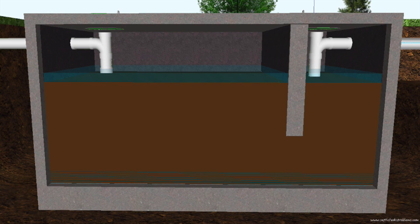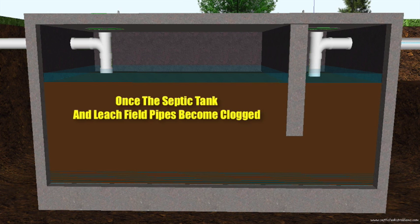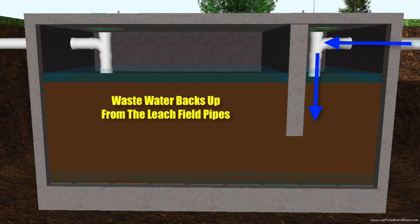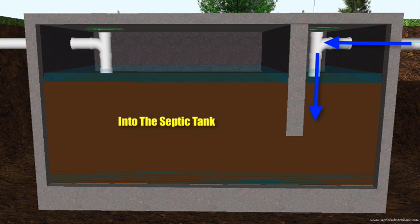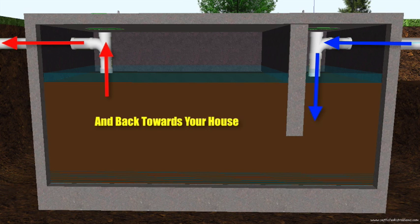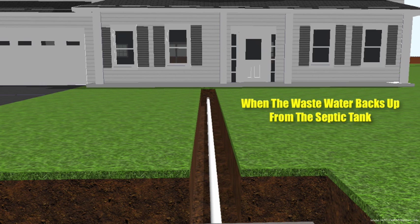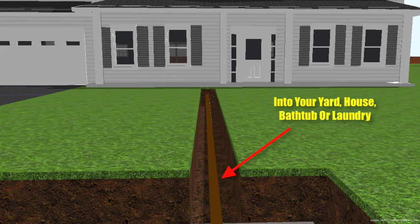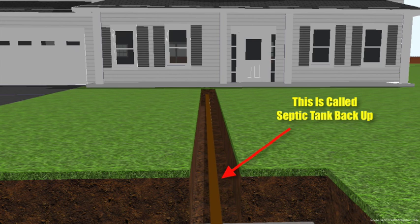So what is septic system failure? Once the drain field pipes become clogged with sludge, the wastewater from the drain field makes its way back down the pipes into the septic tank, and from the septic tank the wastewater backs up toward your house, into the kitchen, the yard, the bathtub, or laundry. This is called septic system failure.